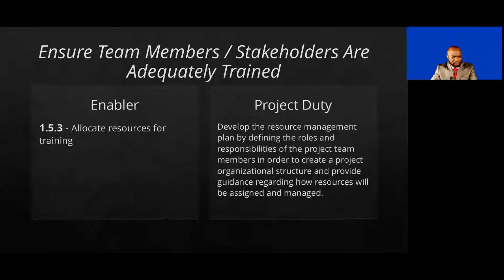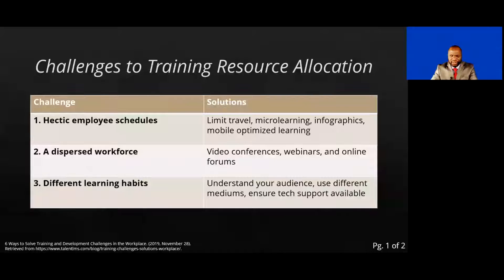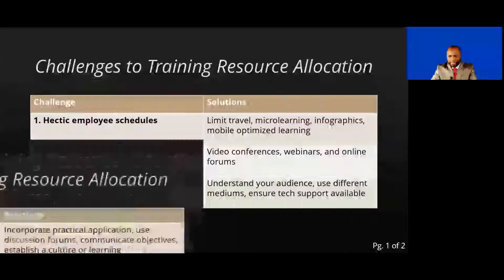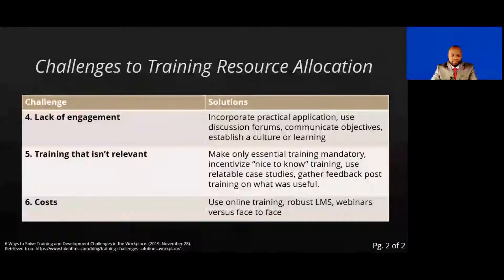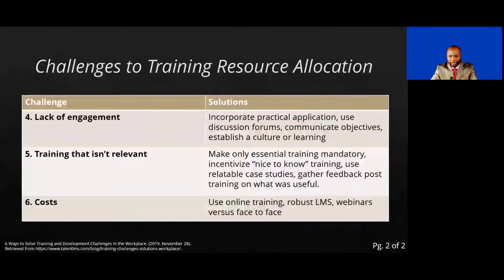The next enabler, number three, is allocate resources for training. The project manager needs to be aware of the resource element when it comes to training. Training could have challenges such as hectic employee schedules, maybe a dispersed workforce, different learning habits, lack of engagement, training that just isn't relevant — we want to make sure we stay away from that — and also the cost of training. The project manager needs to find ways around this.